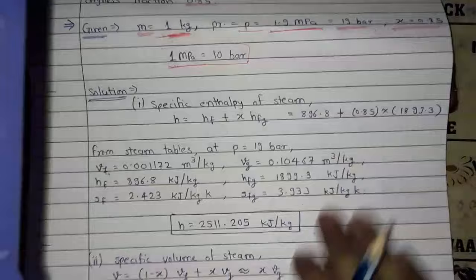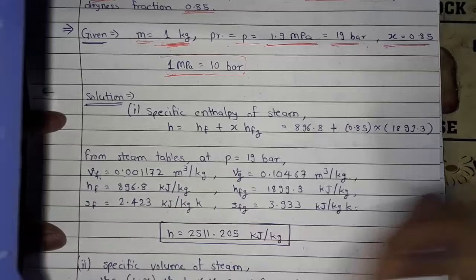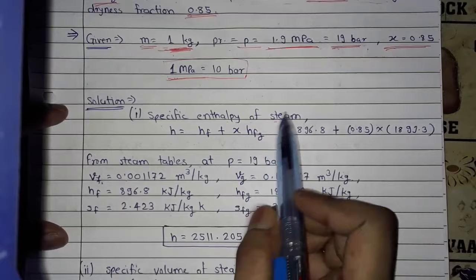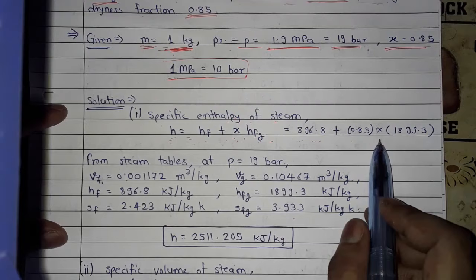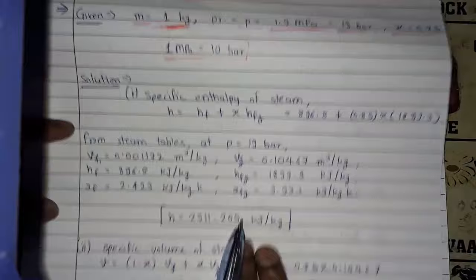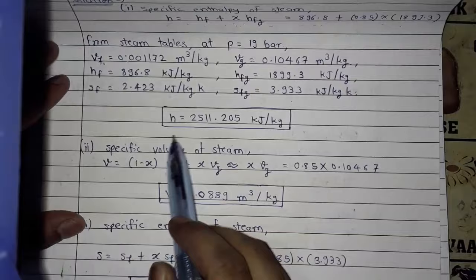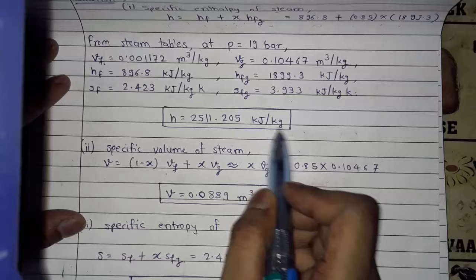From the steam table we have taken all the values. Now we solve for specific enthalpy of steam. The formula is: h = hf + x·hfg, where x is the dryness fraction. Putting in the values from the steam table and the given values, we get h = 2511.205 kJ/kg.